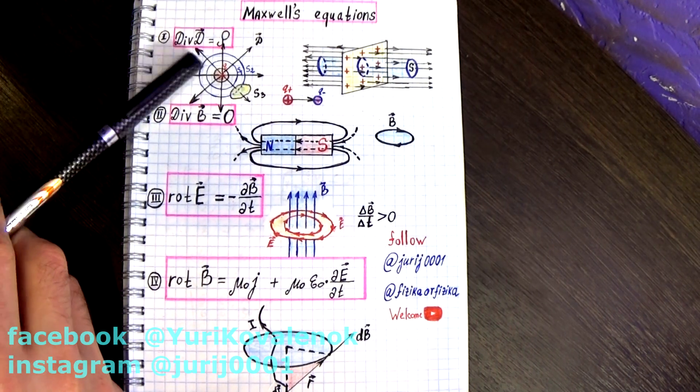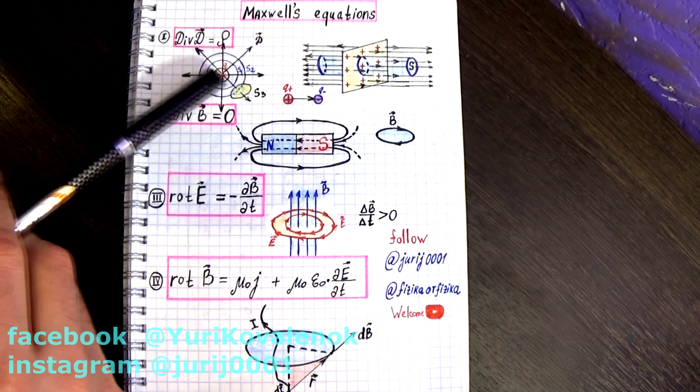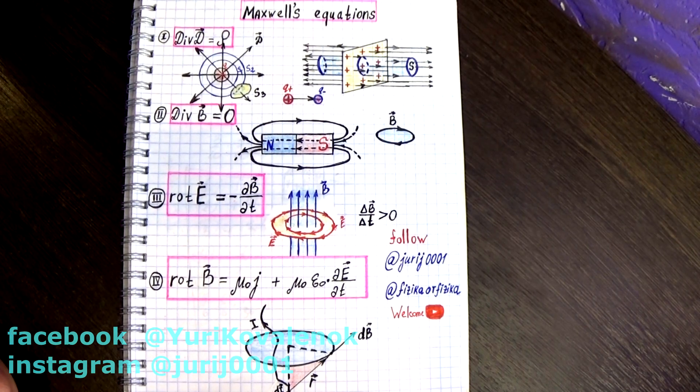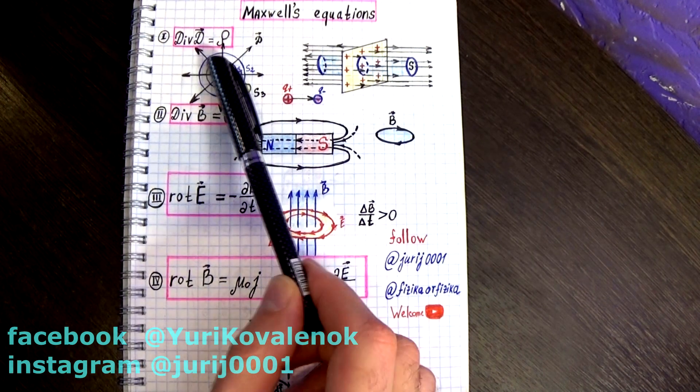Maxwell's first equation is the Gauss theorem in the differential form. I hope you know that the flow of the electric displacement vector through a closed surface is equal to the algebraic sum of the charge that is inside this surface.